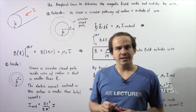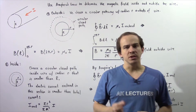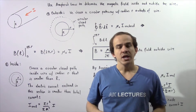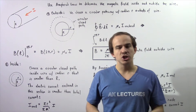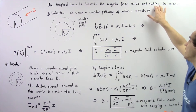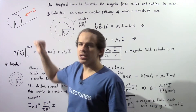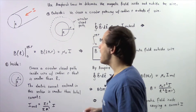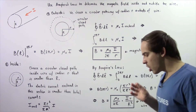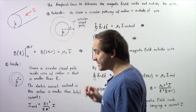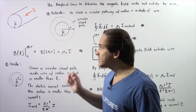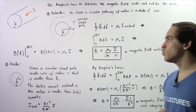In this lecture we essentially want to apply Ampere's law to determine the equation for the magnetic field outside and inside this conducting wire which carries an electric current I. Let's begin with Part A, where we want to calculate the magnetic field outside our conducting wire.